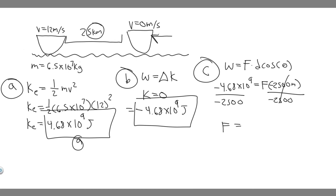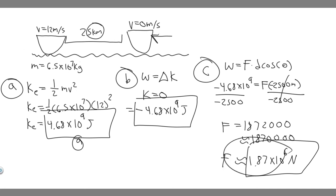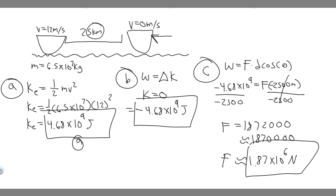When you calculate 4.68 times 10 to the 9 divided by 2,500, you get approximately 1,872,000. Rounding and converting to scientific notation, that's 1.87 times 10 to the 6 newtons. So the constant force required to stop the ship is 1.87 times 10 to the 6 newtons — that's your answer to part C. So to summarize: part A is 4.6 times 10 to the 9 joules, part B is negative 4.68 times 10 to the 9 joules, and part C is 1.87 times 10 to the 6 newtons. Hopefully you found this useful.